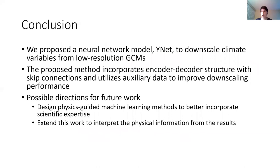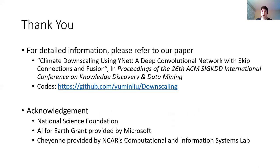In conclusion, in this paper we propose a neural network model Ynet to downscale climate variables from low-resolution GCMs. The proposed network incorporates an encoder-decoder structure with skip connections and utilizes auxiliary data to improve downscaling performance. For more detailed information and results, please refer to our paper, Climate Downscaling using Ynet, a deep convolutional network with skip connections and fusion. Our code is also available on GitHub. Thank you.